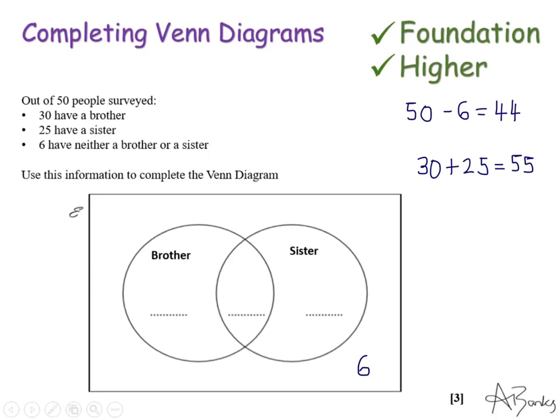And the reason for this is because this middle section here is getting counted twice within these two numbers. Because this is 30 have a brother, so that's this entire circle. And then 25 have a sister, that's this circle here. So we've included this middle section twice. So what we're going to do is we're going to do our 55, which is our total for both of these circles. And if we take away the 44, which is the maximum that we're allowed to put in, that gives me 11. That 11 is my centre.